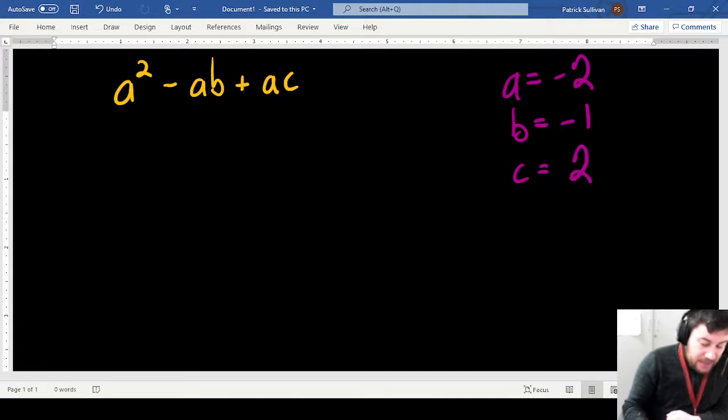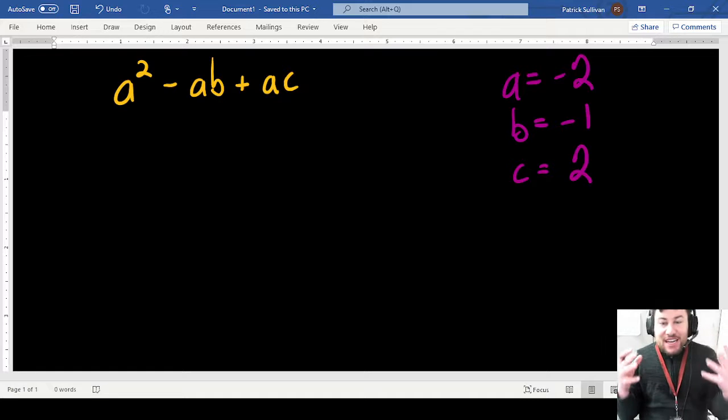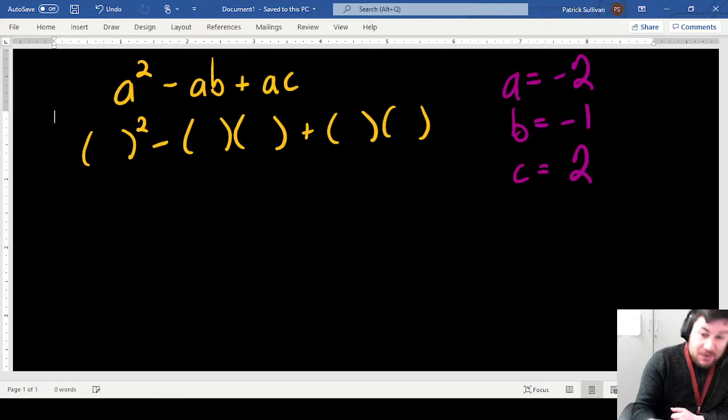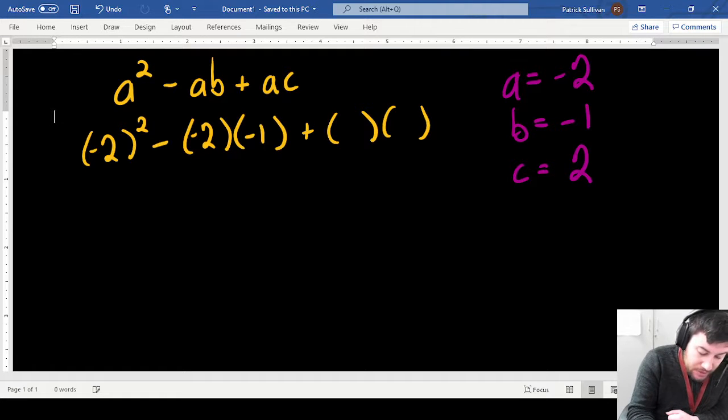Alright, so again, use those parentheses. That is what's going to help you. So I set in my parentheses where my a is, where my a and b are, and then where my a and c are. I'm kind of setting up my problem. Now I'm substituting in my values. A is negative 2, negative 2 here, b is negative 1, a is negative 2, and c is positive 2.